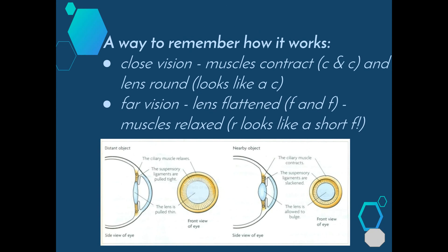A way to remember how accommodation works in the eye is by looking at the letters. So when we have close vision, the muscles contract, so therefore C and C, and the lens becomes rounder, which when you compare a C and an F, a C is a much rounder shape than an F. And then for far vision, the lens flattens. So again, F and F, the muscles are relaxed. So an R looks like a little F. So that's just one easy way to have a look at how we can remember how accommodation works.